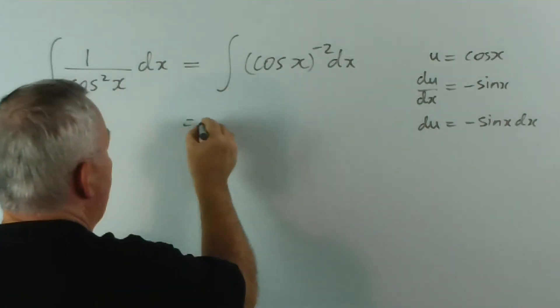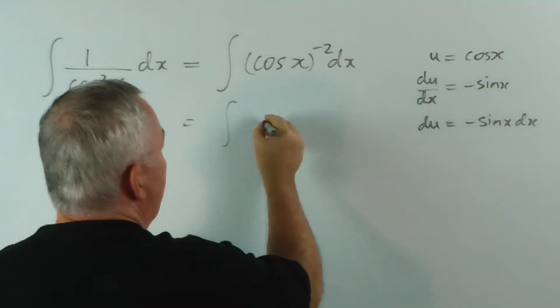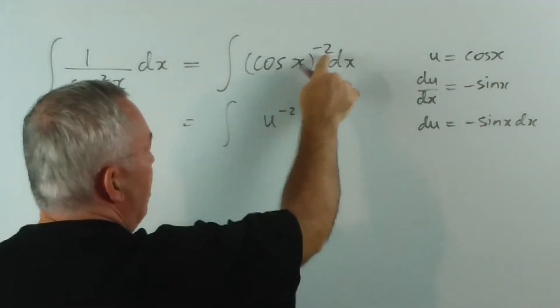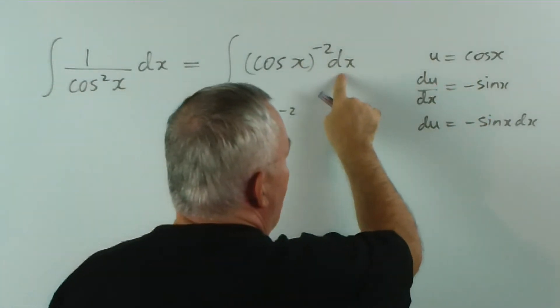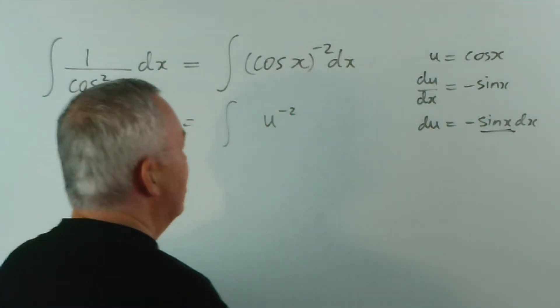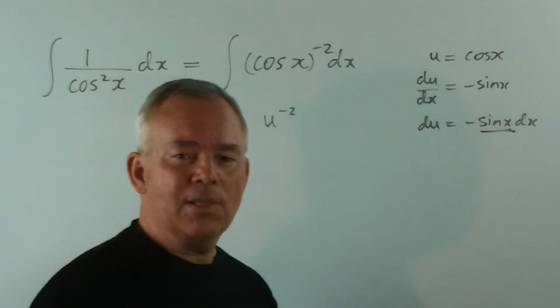And therefore du is minus sin x dx. And therefore we can integrate cos will be u. So cos x can be replaced with u. So u to the minus 2. And we go to replace the dx, but we need sin x as well. And it simply doesn't exist, and we can't make the substitution.